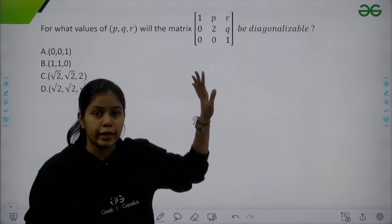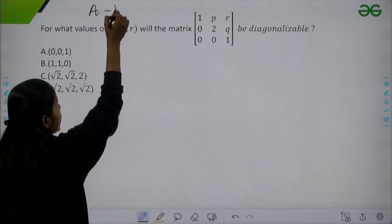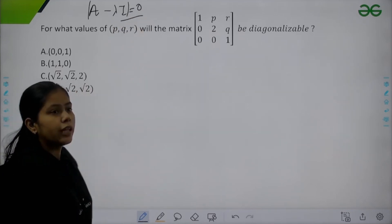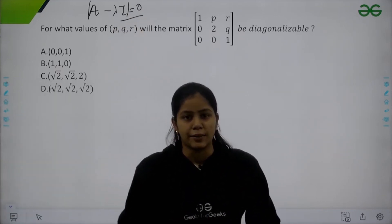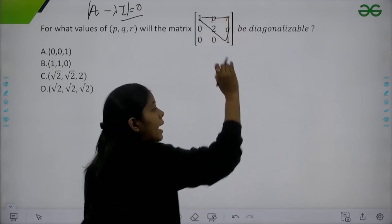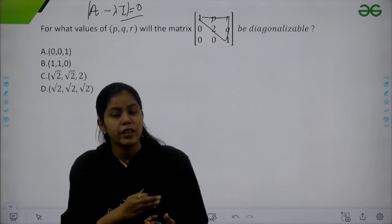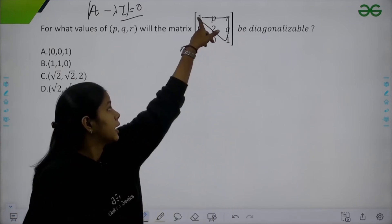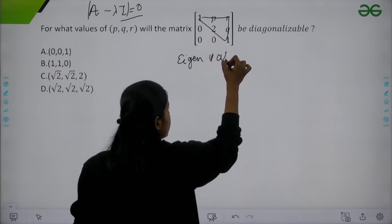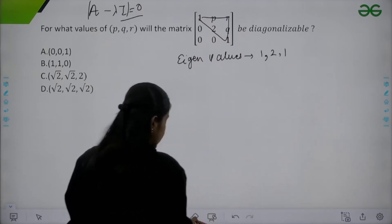For eigenvectors we first look for eigenvalues. For eigenvalues, we take the matrix A minus lambda I, solve the determinant equation and equate it to 0 to find the values of lambda. But if you look at this matrix, you can realize it is an upper triangular matrix. For upper triangular, lower triangular, and diagonal matrices, the eigenvalues are simply the diagonal entries — so the eigenvalues here are 1, 2, and 1.